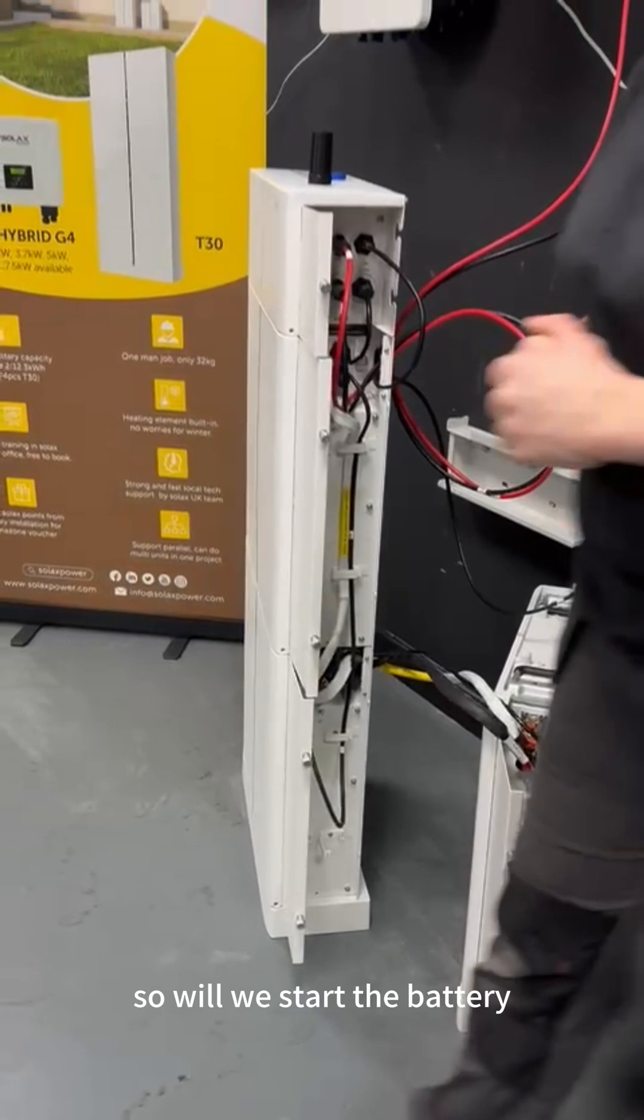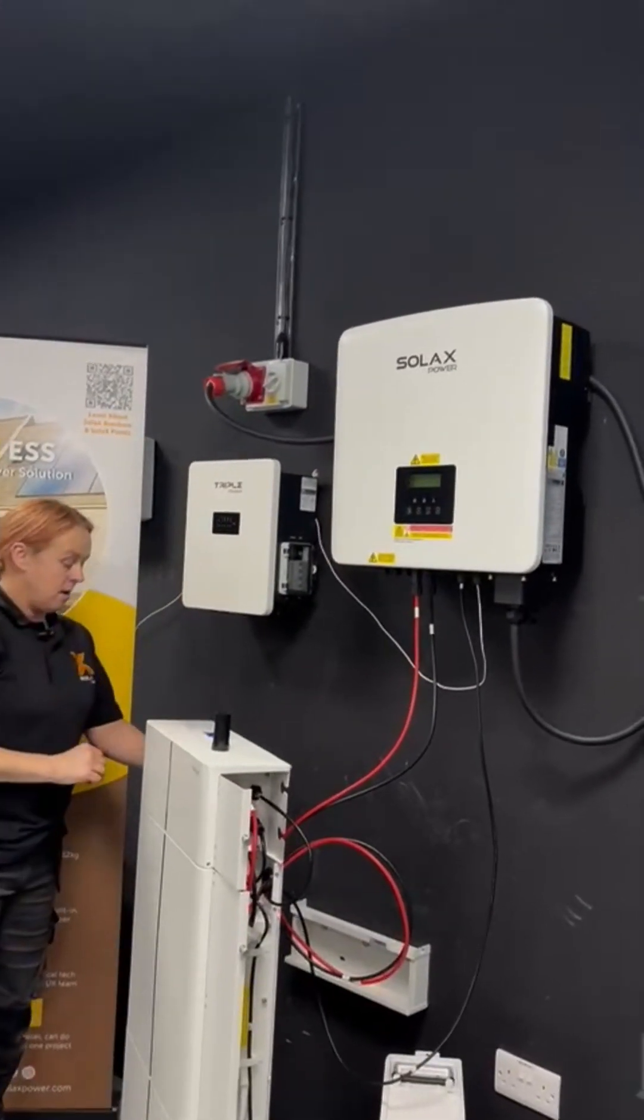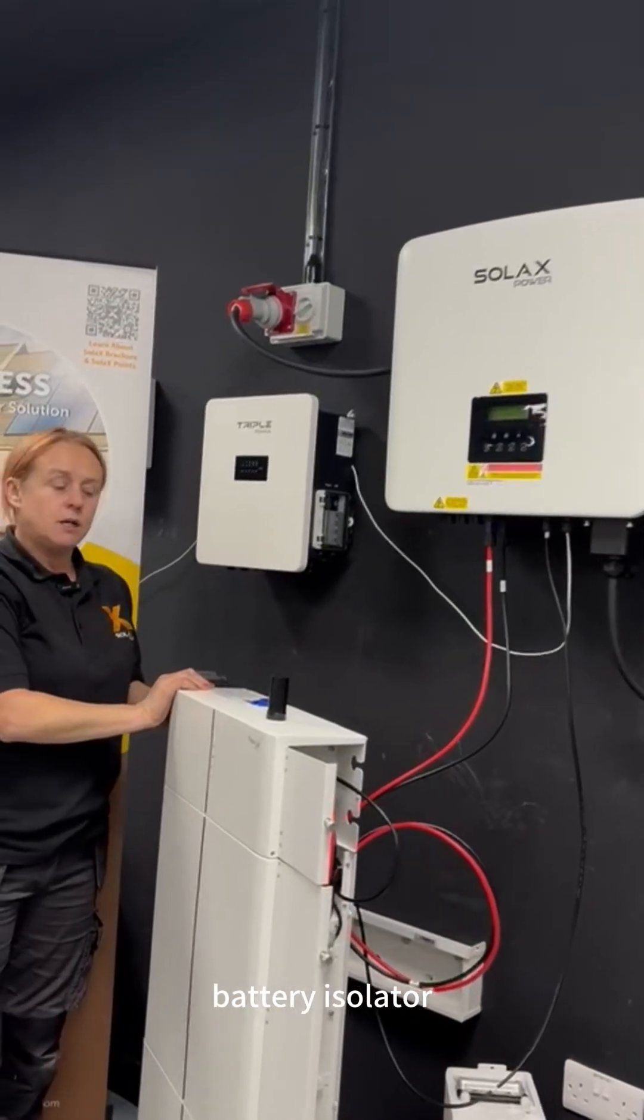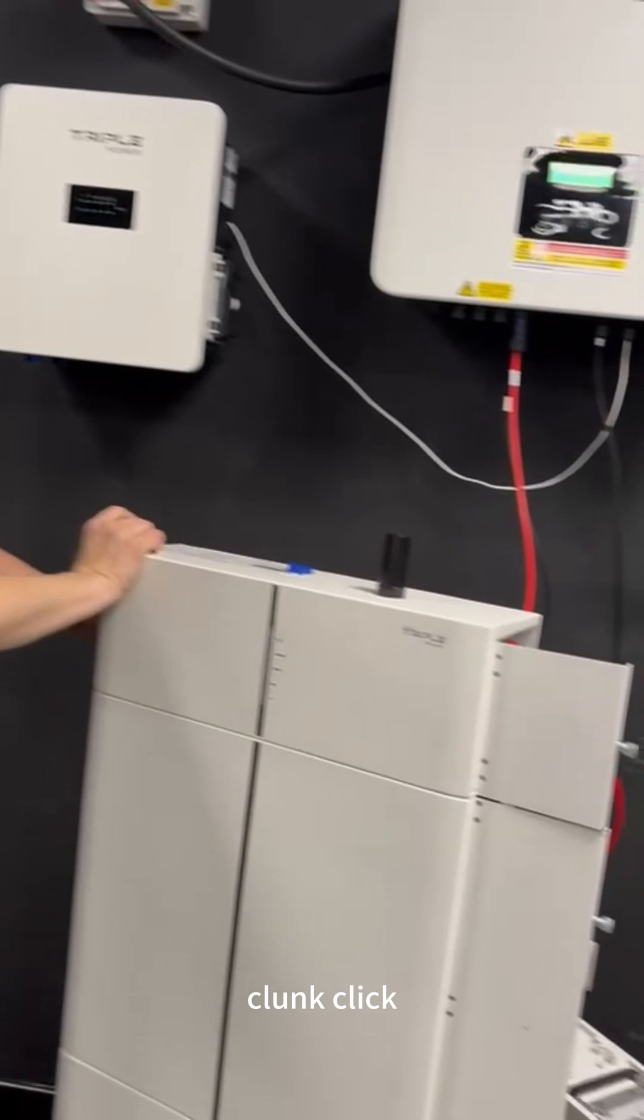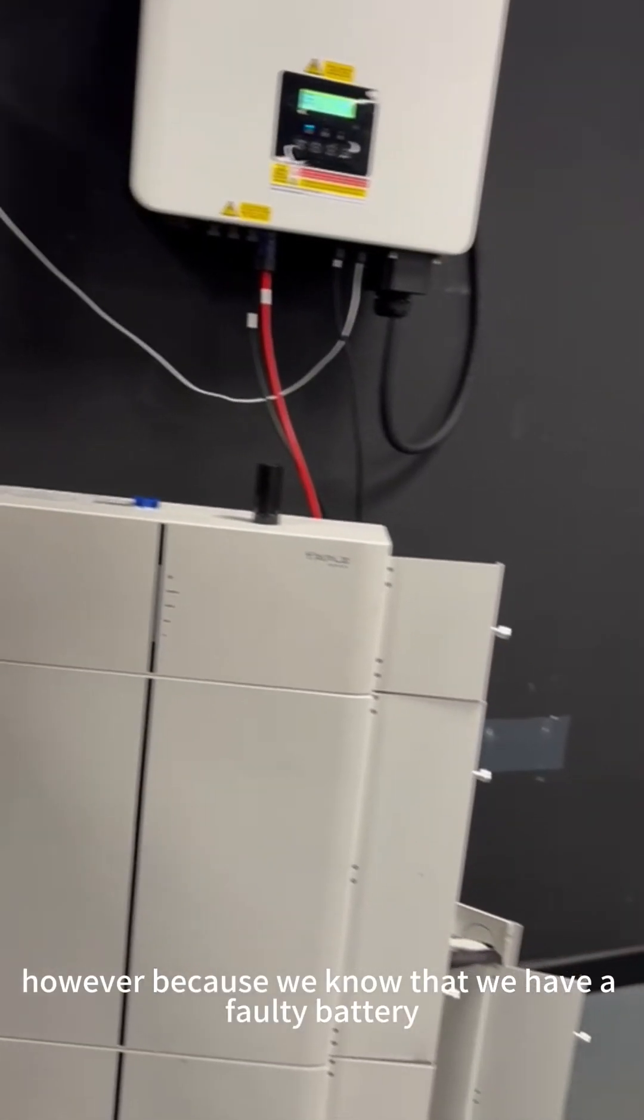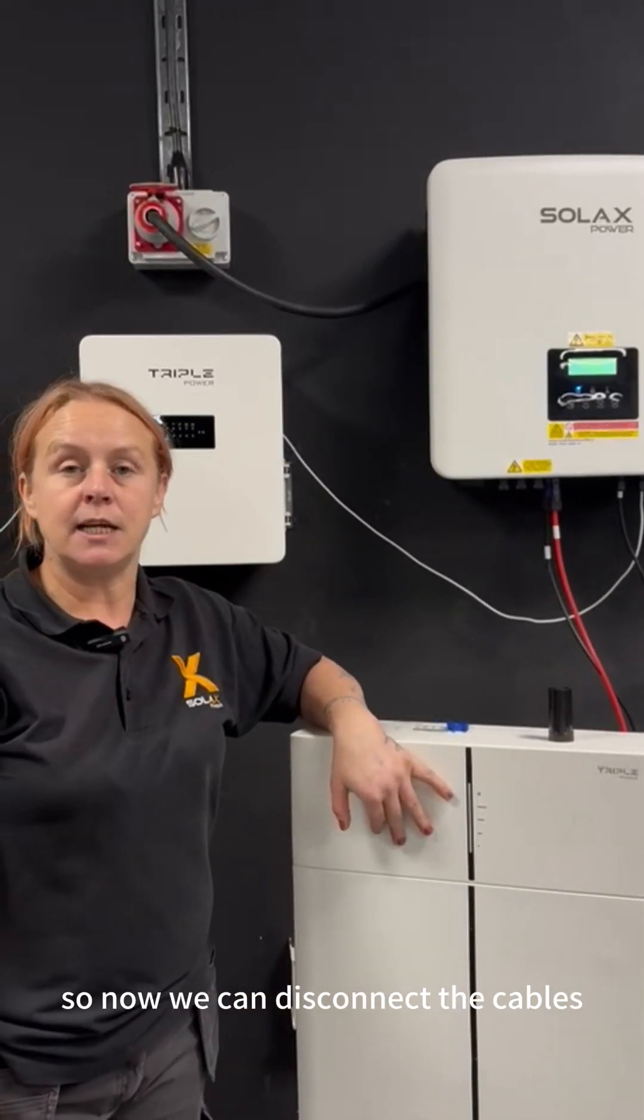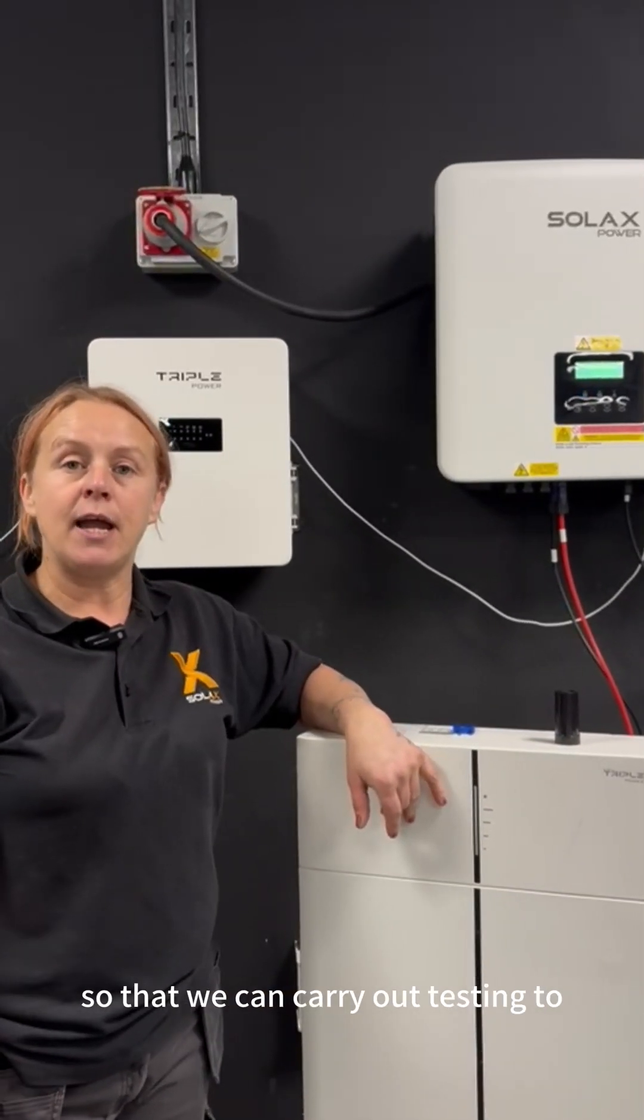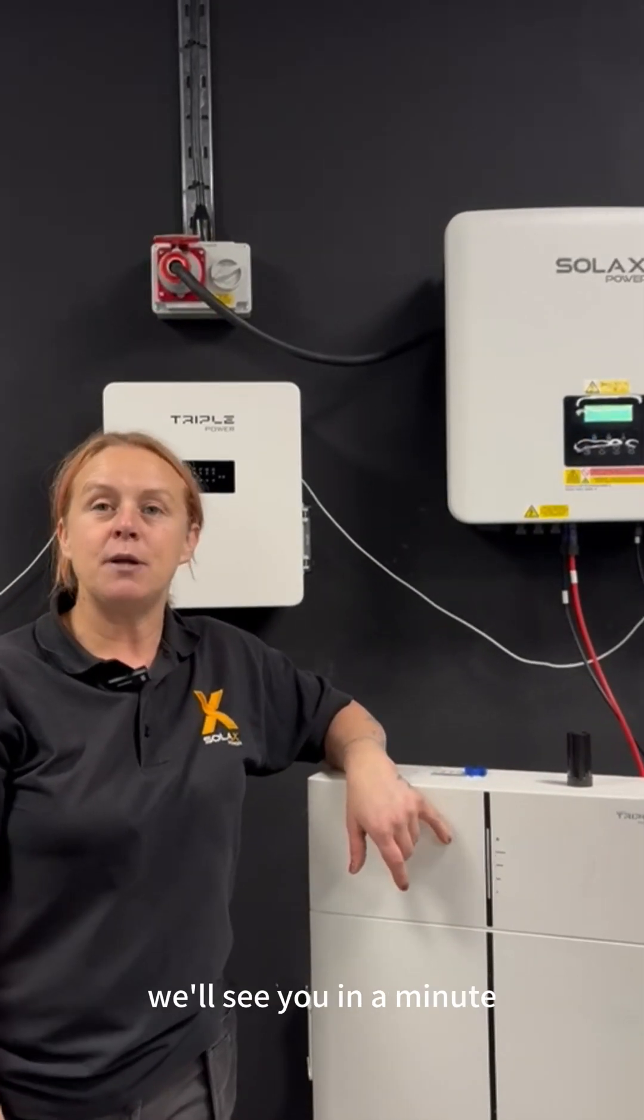So we'll restart the battery and the inverter first. Battery isolator, button, clunk, click. However, because we know that we have a faulty battery in the system, our lights are not going to come on. So now we can disconnect the cables so that we can carry out testing to verify which one of our batteries is faulty.